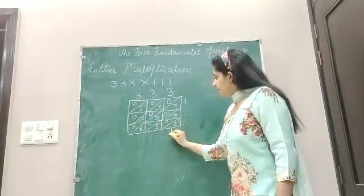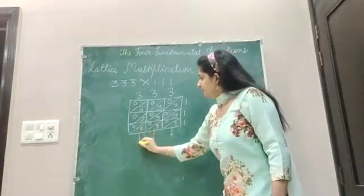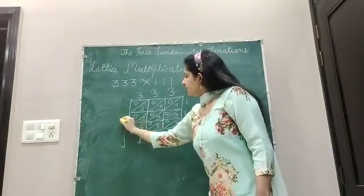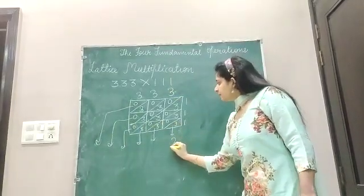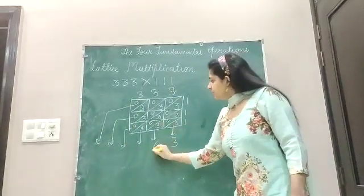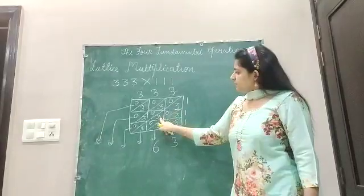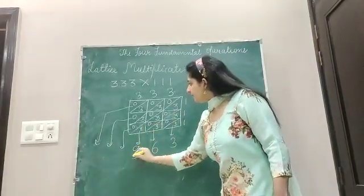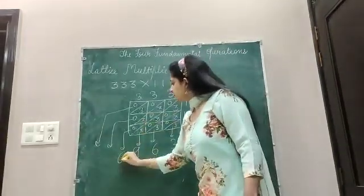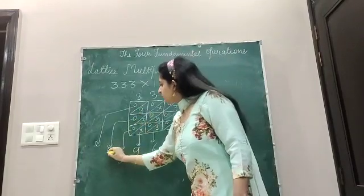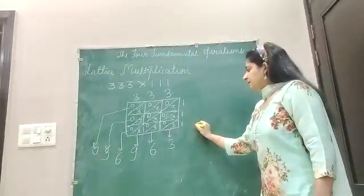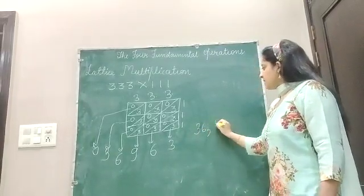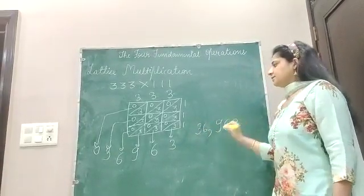Now we have to add the numbers in the diagonal. Here it is 3. 3, 3 plus 3, 6. 3 plus 3, 6 plus 3, 3 plus 3, 3 plus 3, 6. 3 plus 0, 3, and here it is 0. So the answer is 36,963.